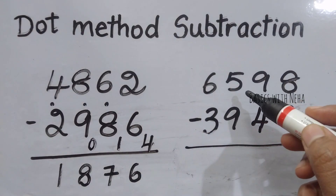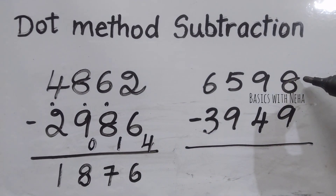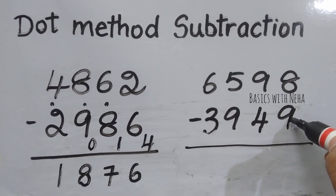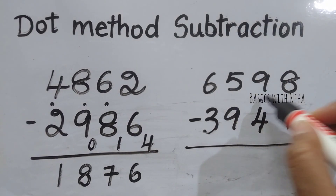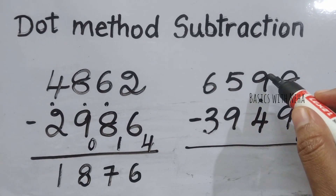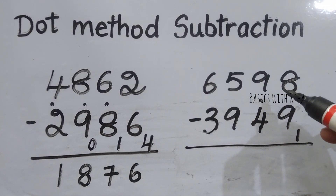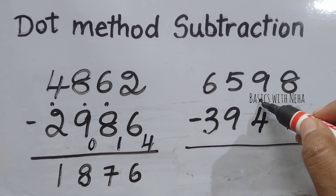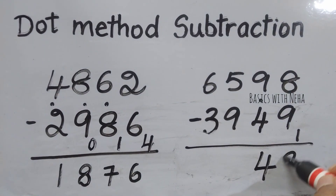Let's try 6598 minus 3949. Again, the minuend is smaller than the subtraction, so you will have to take the complement of 9 on base 10, which is 1. Since you have used the complement, put a dot. Now the minuend is larger than the subtraction, so consider this dot to be 1: 4 plus 1 is 5, 9 minus 5 will give me 4, and 8 plus 1 will give me 9.